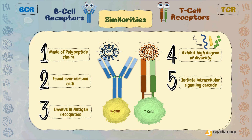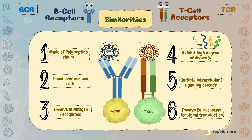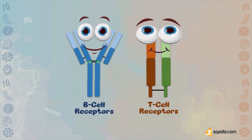Also, both these receptors cannot initiate a cellular response all alone. They need co-receptors, like cluster differentiation proteins, to enhance signal transduction. So we can say that both these receptors are related in terms of structure, function, and many other properties, which highlight their shared mechanisms for directing the adaptive immune response, making them extremely important components of the immune system.